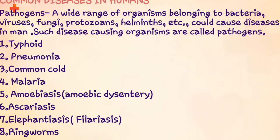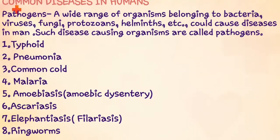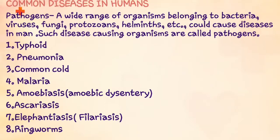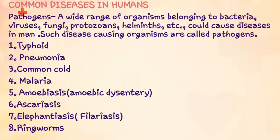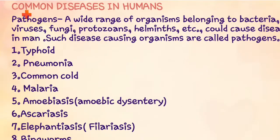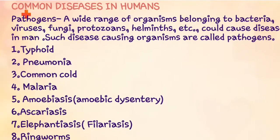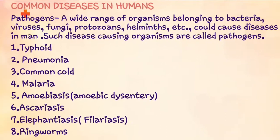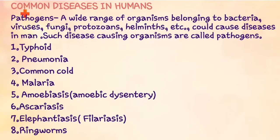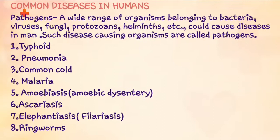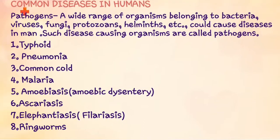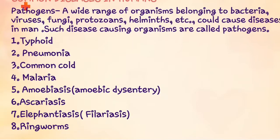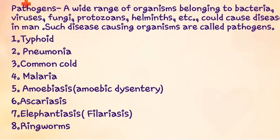The next topic is common diseases in humans. There are many diseases such as typhoid, common cold etc. First of all we will discuss pathogens. What are pathogens? They are organisms belonging to bacteria, viruses etc. that can cause disease in humans. Pathogens need a certain environment to multiply on the host body to cause disease.